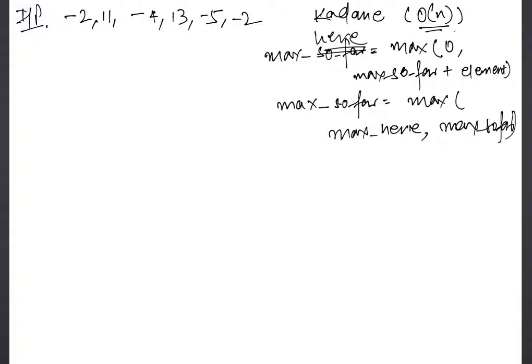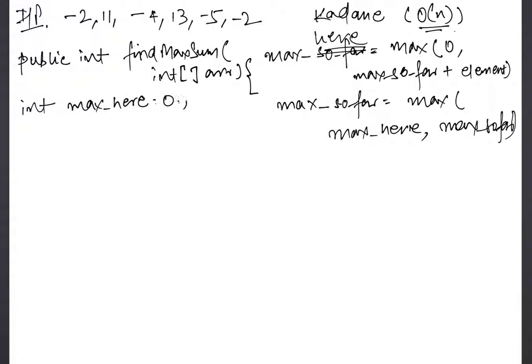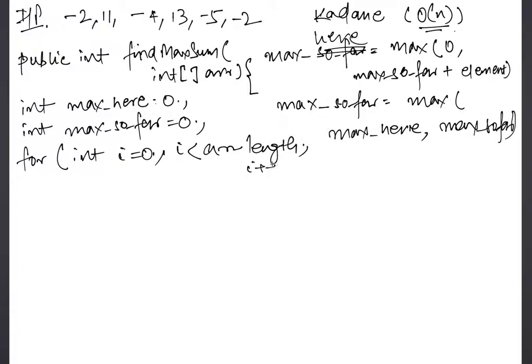Let's write the code first and then we can do a dry run and see how it exactly works. So let's take a small method, find max sum, and we take the array of integers. int max_here equals 0, int max_so_far equals 0. Then we start the iteration. For int i equals 0, i less than array length.